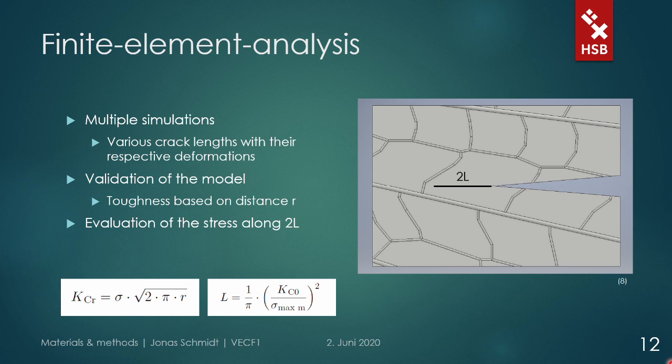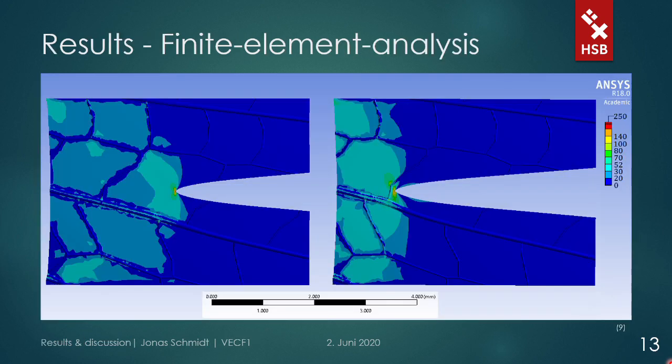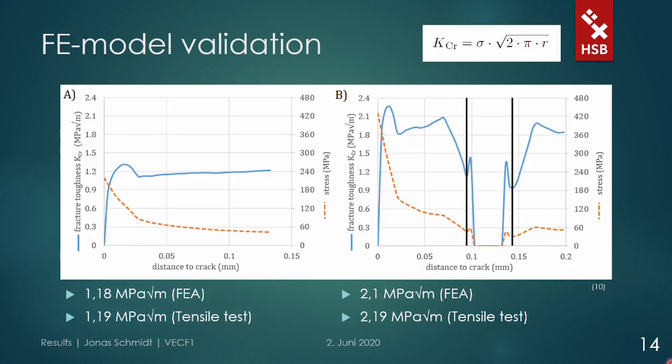With this, we come to the results. Here, the maximum principal stress is visible for the first sample with two different crack lengths. On the left side, the initial crack which is about to propagate with the applied displacement, and on the right side, the same sample with the crack tip directly at the vein where it was arrested in the tensile test. These stresses were exported for further analysis. In these graphs, we can see the stresses in orange over the distance from the respective crack tip, as well as the associated calculated fracture toughness in blue.